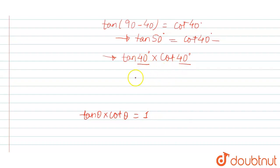So it's written tan 40 degree into cot 40 degree, which would also be equal to 1. So tan of 50 degree into tan of 40 degree is equal to 1.